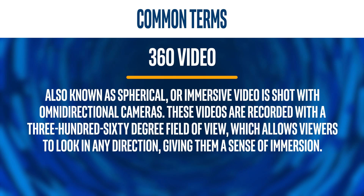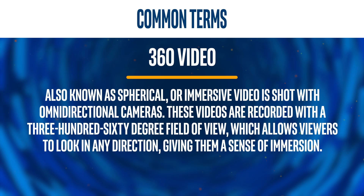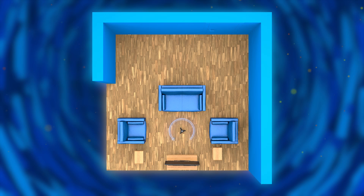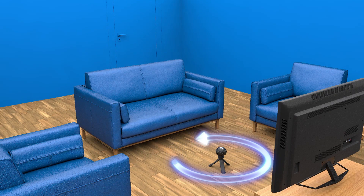360 video, also known as spherical or immersive video, is shot with omnidirectional cameras. These videos are recorded with a 360-degree field of view, which allows the viewers to look in any direction, giving them a sense of immersion. 360 videos are 3DOF, designed to be viewed from a single location without the ability to move.